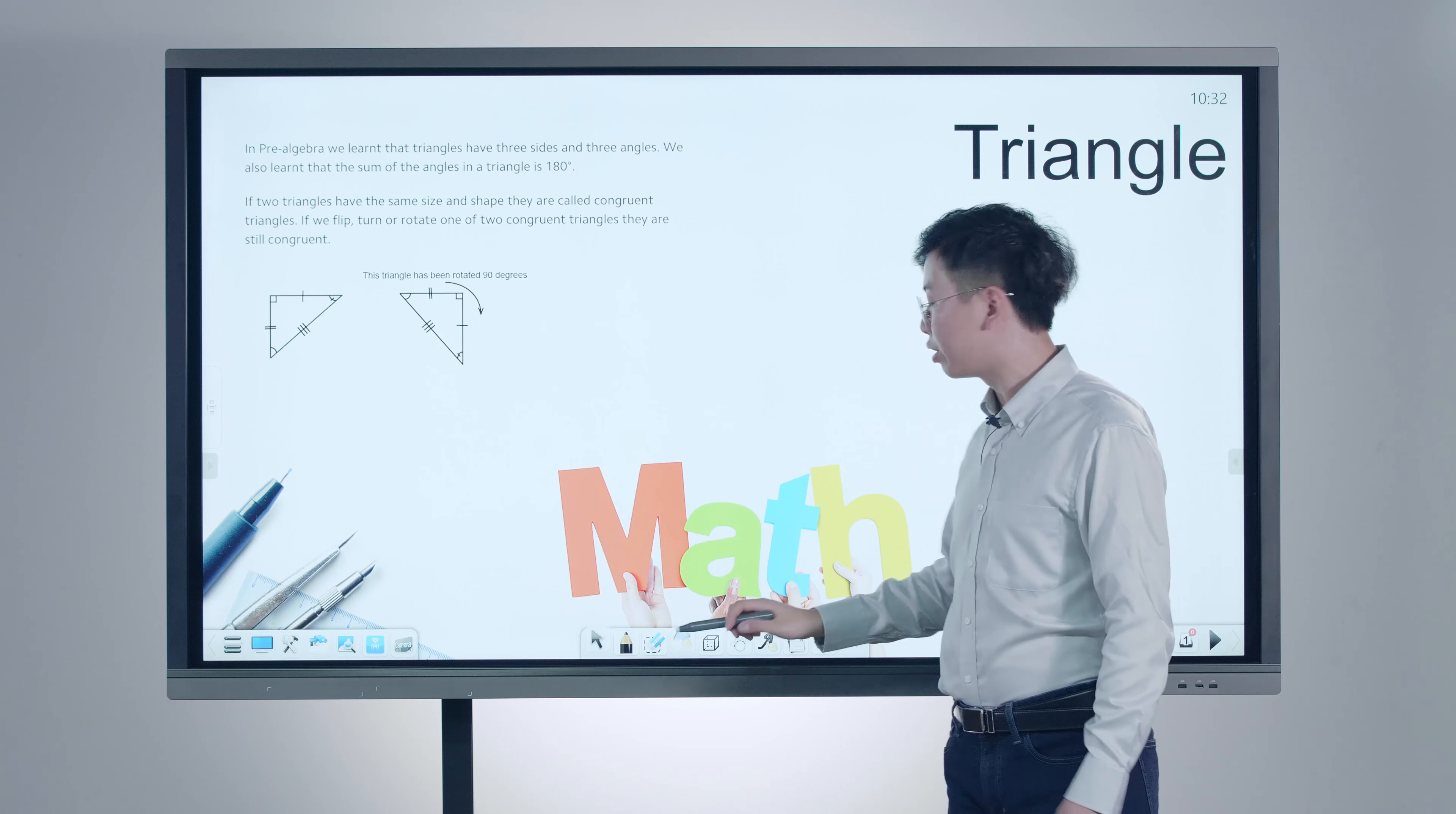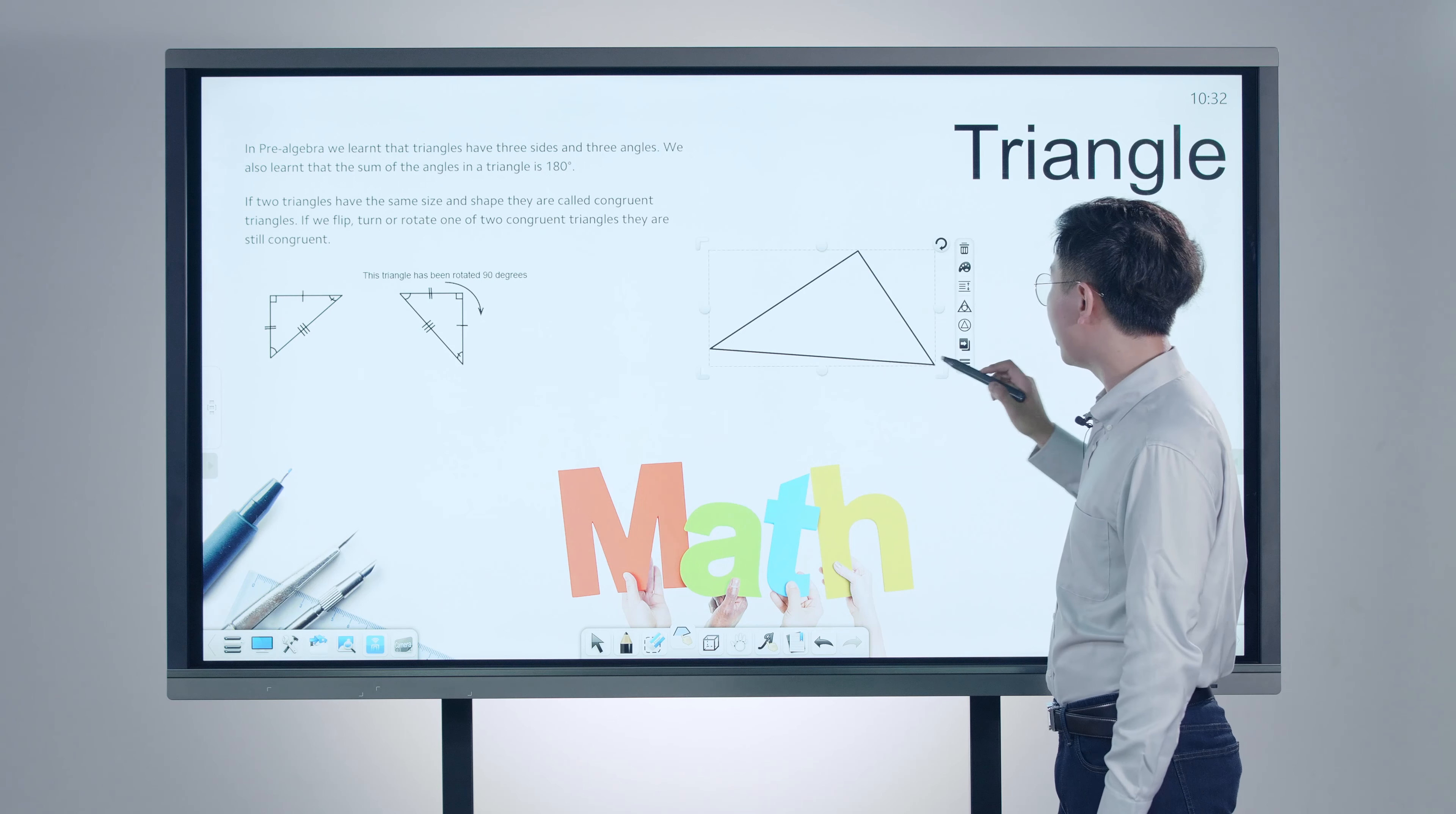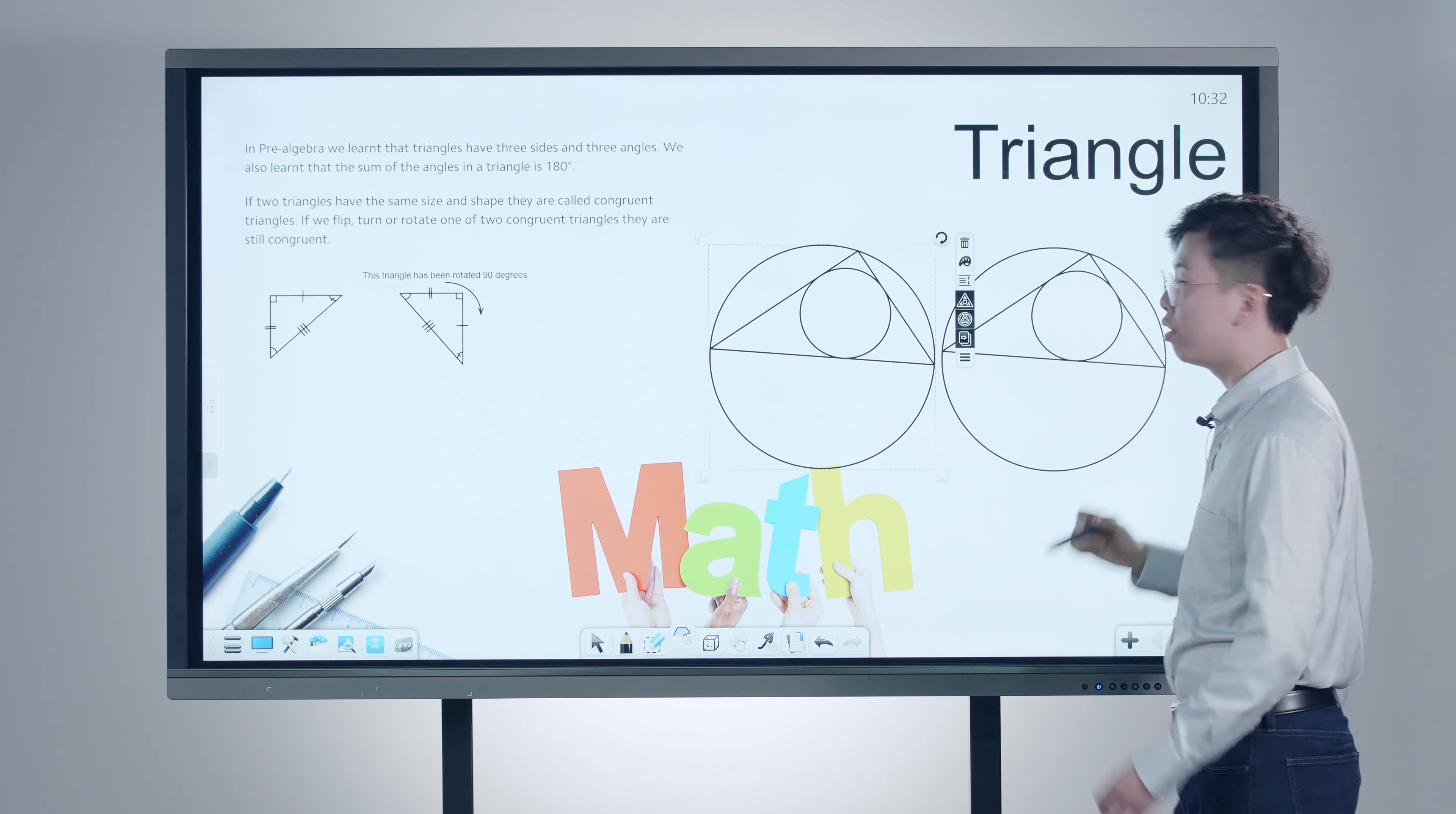In a geometry class, drawing a triangle no longer requires holding a ruler on the board. You can easily add in the inner circle, outer circle, and one key to duplicate the whole group shape.